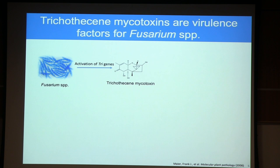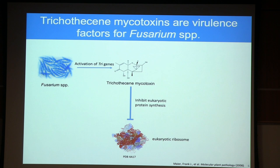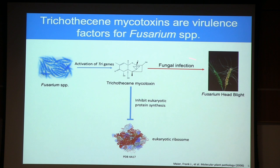Some of the most important genes activated at this stage are the tri-genes, responsible for biosynthesis of trichothecine mycotoxins, which are potent inhibitors of eukaryotic protein synthesis. These fungi produce trichothecine mycotoxins that spread ahead of the fungal infection and eliminate the plant's ability to synthesize proteins, thereby eliminating the plant's ability to respond to the infection — leading to the spread of Fusarium head blight throughout the wheat head.